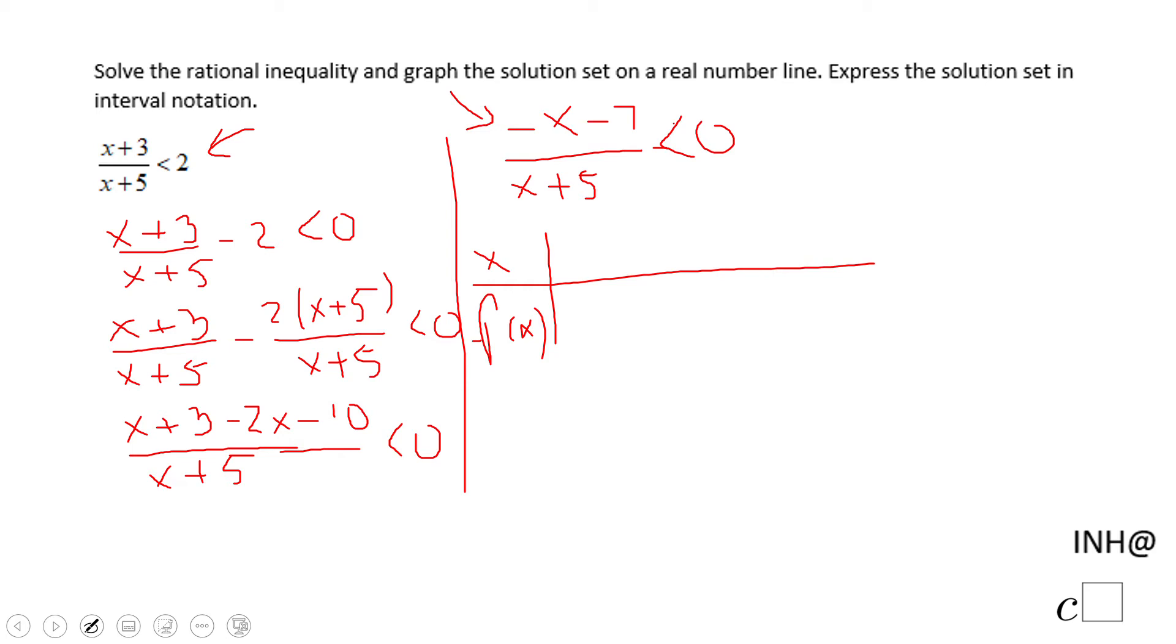Let's see the sign. We notice that the numerator is zero when x is negative seven. And the denominator is zero when x is negative five. So negative seven here, the numerator is zero which means the fraction is zero. Negative five here, the denominator is zero which means the function is undefined.